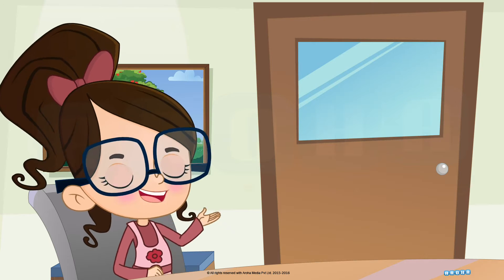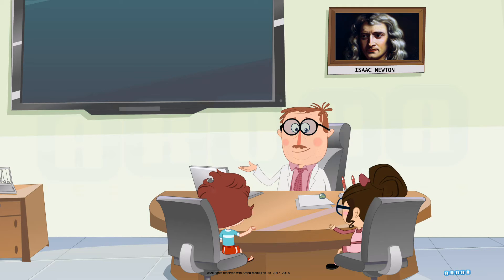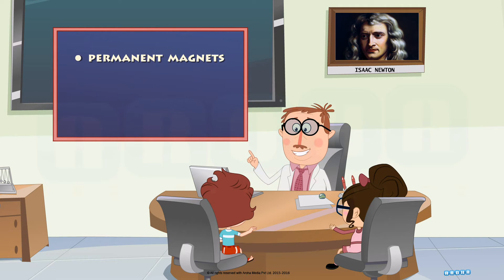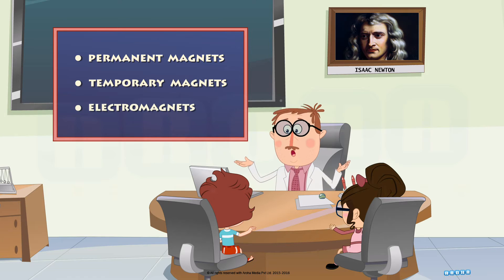How many types of magnets are there? Good question, Rhea. There are three types of magnets. One, the permanent magnets. Two, the temporary magnets. And three, the electromagnets.